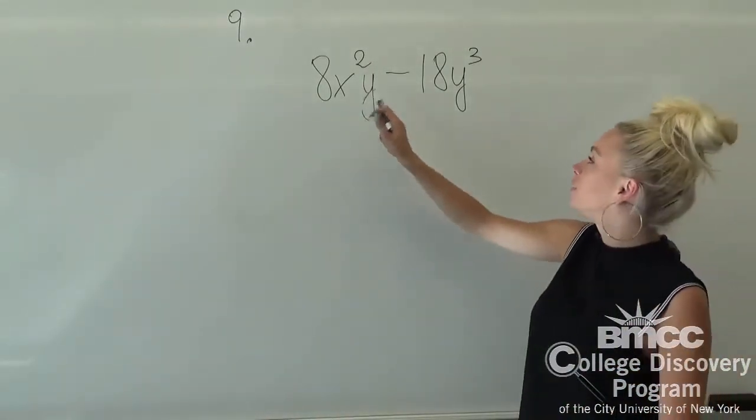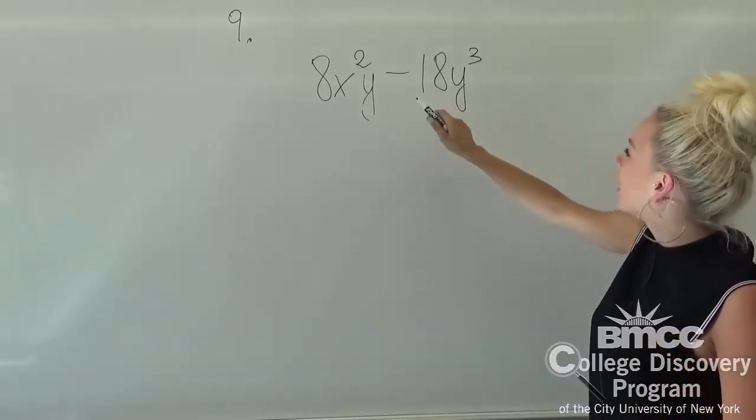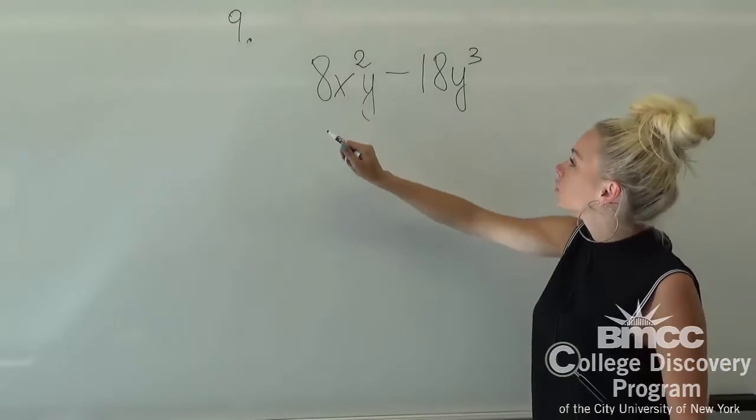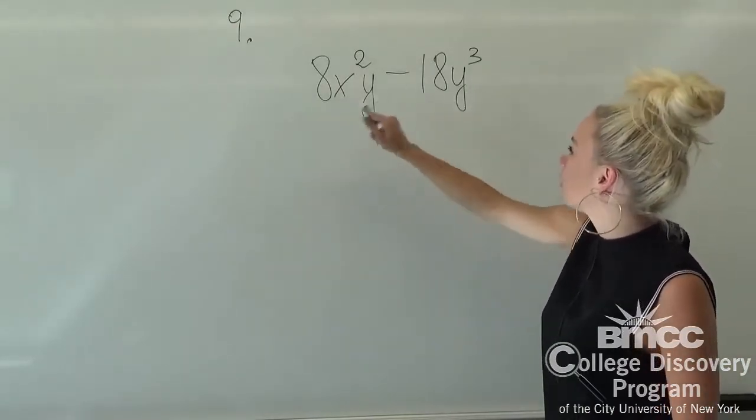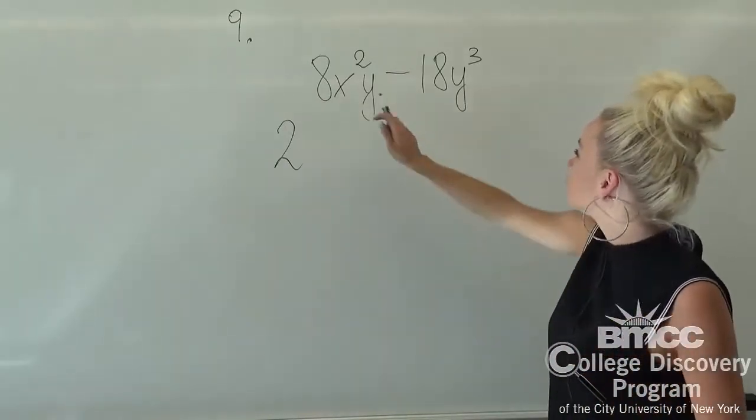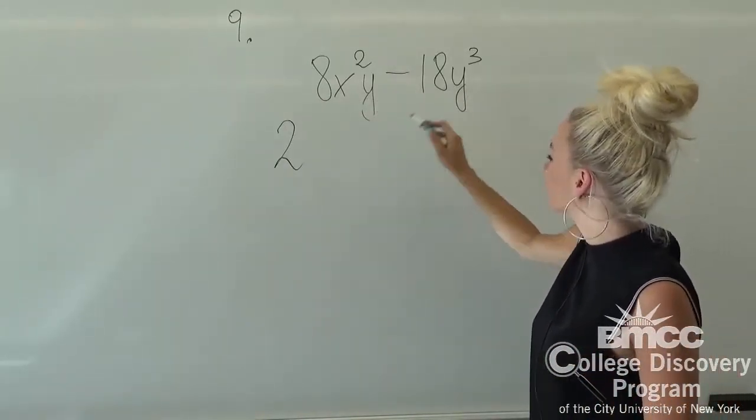We have 8x² times y minus 18y³. We can see two common factors over here. We can factor out 2 out of those two, and we can also factor out y, which you can see in both terms.